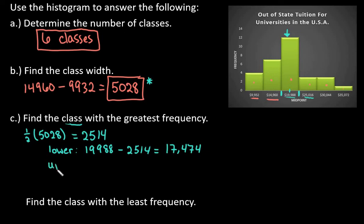Our upper limit, or really what's going to happen is where our next class starts at, is we're going to take the 19,988 and add to it the 2,514. We end up with 22,502.